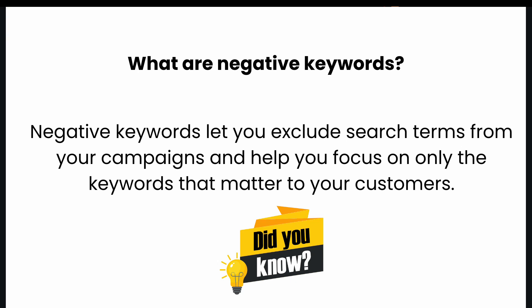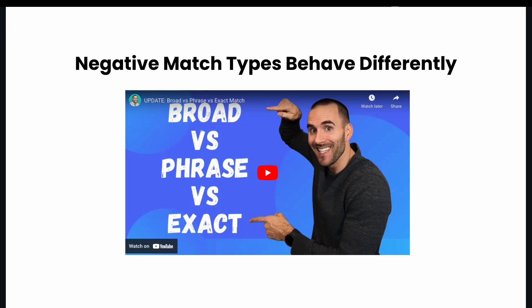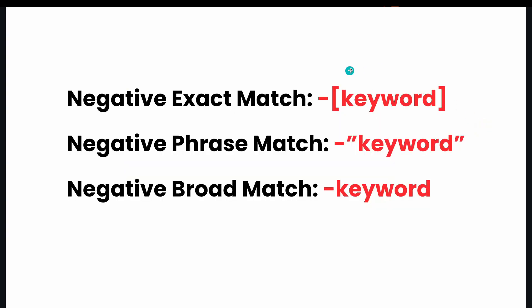In today's slides, we're going to be talking about negative keywords primarily from a search campaign setup side. There are negative keywords on the display side that behave differently, but we're going to focus on the search side in today's video. It's also important to know that negative keyword match types behave differently from traditional keyword match types. I have a whole video on the latest update for how broad, phrase, and exact match keyword match types operate — I'll include a link in the description.